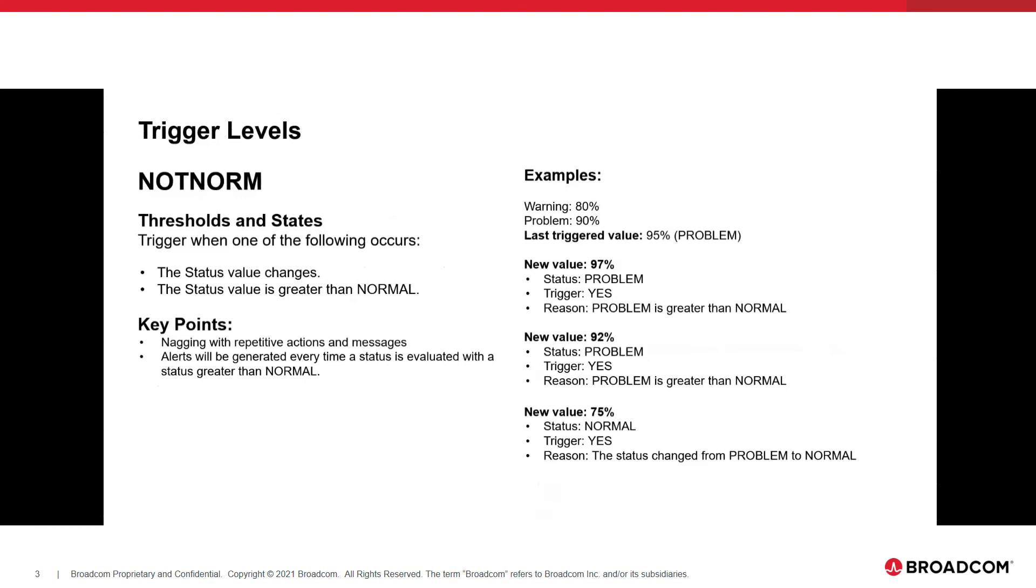Again, in the top case, you start with 95 being a problem. In the next case, you got a 97. That's still a problem. Does it trigger? Yes. Why? Because problem is greater than normal. It's in a not normal condition. Same thing on the next one where it's 92. 92 is less than the 95 where we've already triggered that. But in this case, you said you want to be notified anytime it's not normal. The bottom one, of course, we're going essentially from 95 down to 75, which is a status of normal. Why does it trigger in this case? Well, it's now in a normal state, which is opposite of not normal. But we still have to tell you because it went from problem to normal. So we have to tell you that you were previously in a not normal state and now you are.